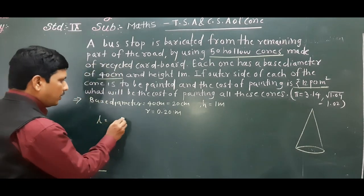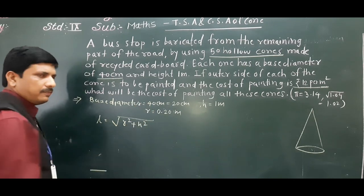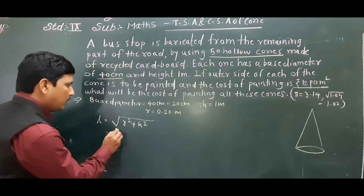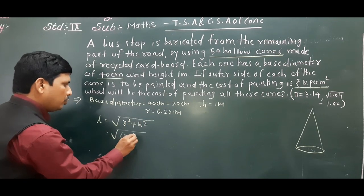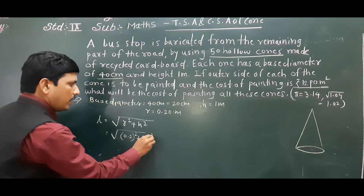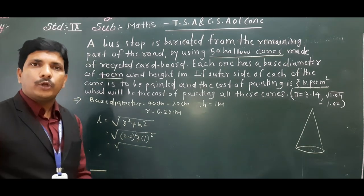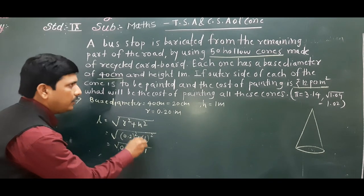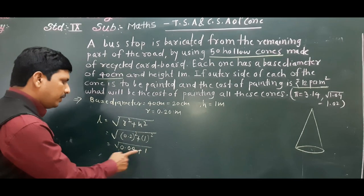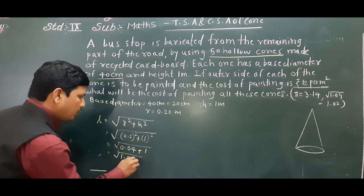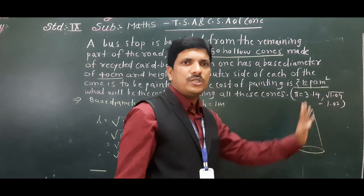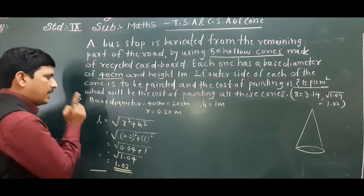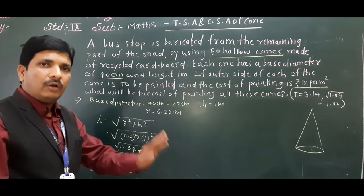The slant height l = √(r² + h²). We have r = 0.2 m and h = 1 m. So l = √(0.2² + 1²) = √(0.04 + 1) = √1.04. It is given that √1.04 = 1.02, so slant height l = 1.02 meters.